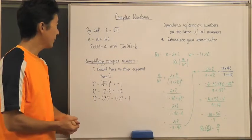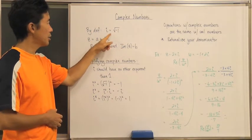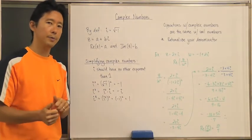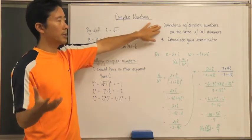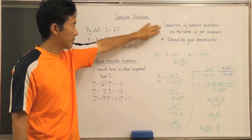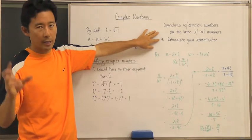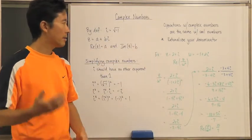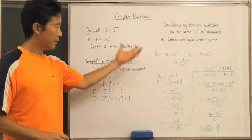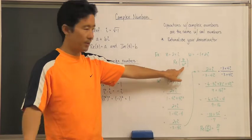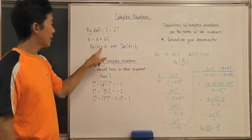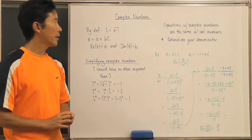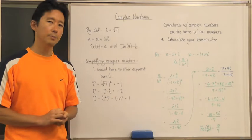To recap: i is defined as the square root of negative one, and all complex numbers take the form a plus bi. When simplifying, i must have no exponent other than one. All real-number algebraic operations apply to complex numbers. Always rationalize your denominator — since i is the square root of negative one, it's a radical, so multiply by the conjugate whenever i appears in the denominator. We'll practice these rules in class.